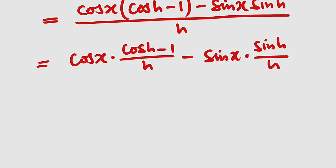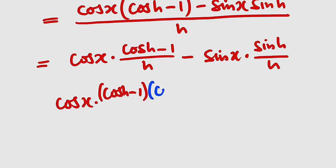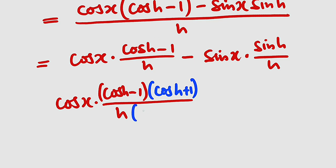We are not going to apply the limit yet. So now I would like to multiply this first fraction by the conjugate of the numerator. The numerator is cosine h minus 1, so its conjugate will be cosine h plus 1. So we multiply the top and the bottom by cosine h plus 1. Cosine h plus 1 divided by cosine h plus 1 is 1, so multiplying by it will not change anything.